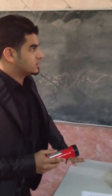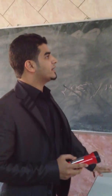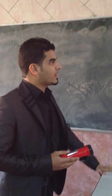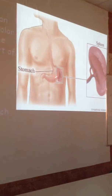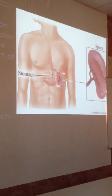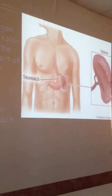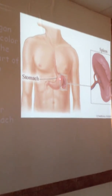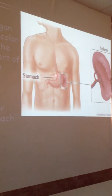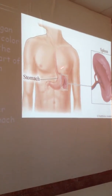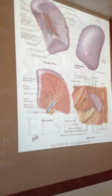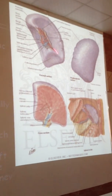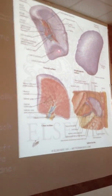The spleen is dark red in color and lies in the left upper part of the abdomen, between the stomach and the diaphragm, just posterior to the upper part of the stomach which is called the fundus. It has two surfaces: the diaphragmatic surface and the visceral surface.